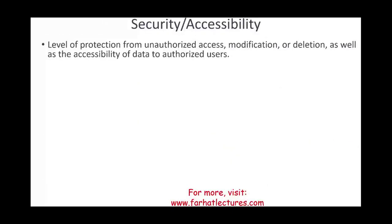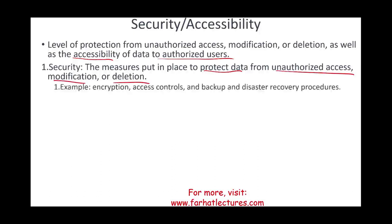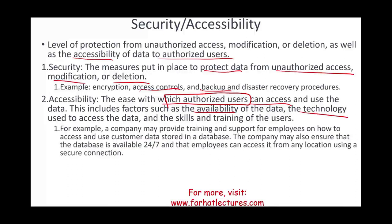The third component of data quality is security and accessibility quality. Security is the level of protection from unauthorized access, modification, and deletion, while accessibility refers to all authorized users being able to use the data. Security measures include encrypting the data, having access controls, and ensuring backup and disaster recovery procedures. Accessibility means the ease with which authorized users can access and use the data — including factors such as availability, the technology used to access the data, and the skills and training of the users. For example, a company should provide training and support for employees on how to access and use customer data, and should ensure the data is available 24-7 from any location over a secure connection.